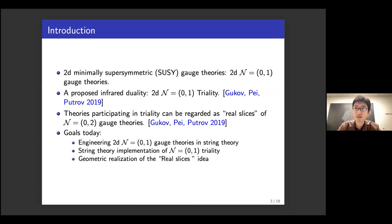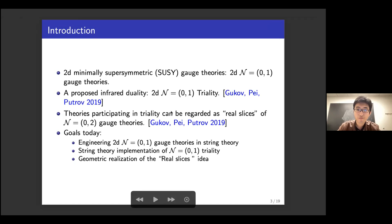Recently there is an infrared duality proposed by Gukov, Pei, and Putrov, very similar to 4D Seiberg duality or to 2D (0,2) duality. The theories participating in this infrared duality can be regarded as real slices of (0,2) gauge theories in 2D — a (0,2) to (0,1) correspondence. My goals today are to provide a method to geometrically engineer these 2D (0,1) gauge theories and to show how this construction gives an implementation of (0,1) triality and a realization of the real slice idea.